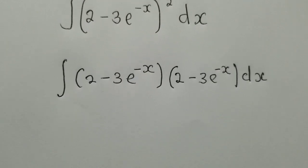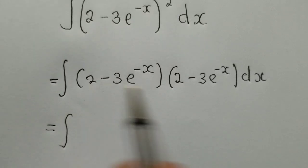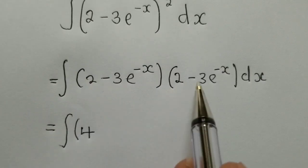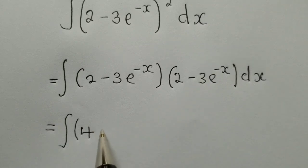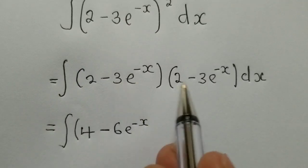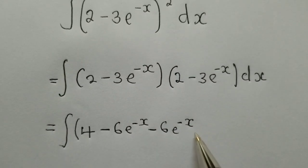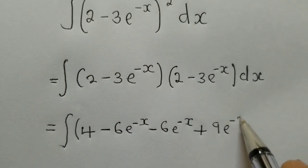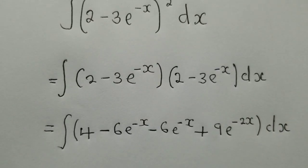So thereafter we say: equal to integral. We distribute — 2 times 2 gives 4; 2 times negative 3e^(-x) gives negative 6e^(-x); the same multiplication on the other side also gives negative 6e^(-x); and then plus 9e^(-2x) dx.